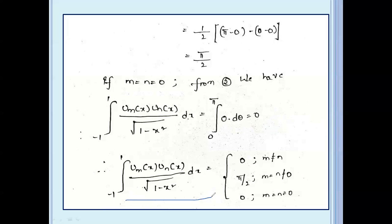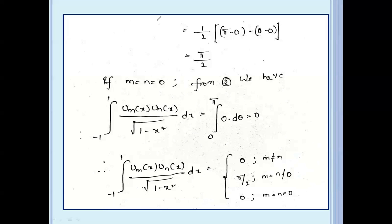Therefore, the integral from minus 1 to 1 of Um(x) Un(x) divided by root(1 minus x squared) dx equals 0 if m not equal to n, pi by 2 if m equal to n not equal to 0, and 0 if m equal to n equal to 0. Hence it is proved. Thank you, please like, share, and subscribe.